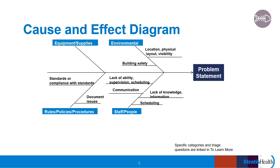The team then works to determine which of the causes, if eliminated, would have the greatest ability to prevent the problem from occurring in the future. The team should also identify any significant contributing factors — those are factors that by themselves did not cause the problem, but made it more likely to occur.